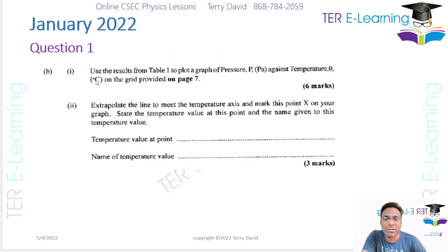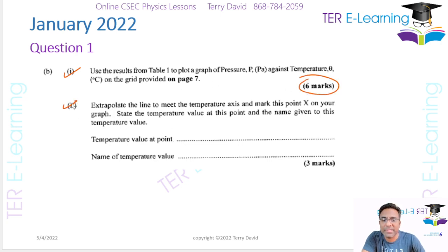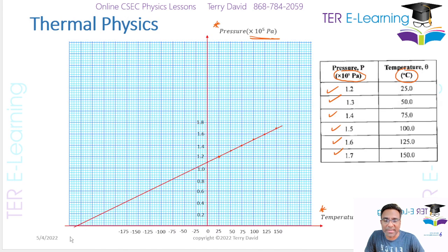The next part - that was worth six marks for plotting the graph. Part two says: extrapolate the line to meet the temperature axis and mark this point X on your graph. So I've gone back and that's my point X on my graph. I've extrapolated it until it reached my temperature axis.